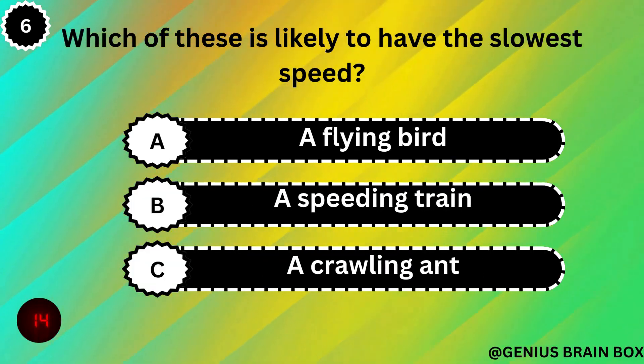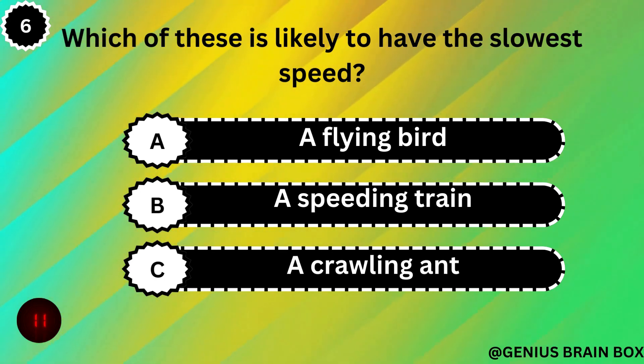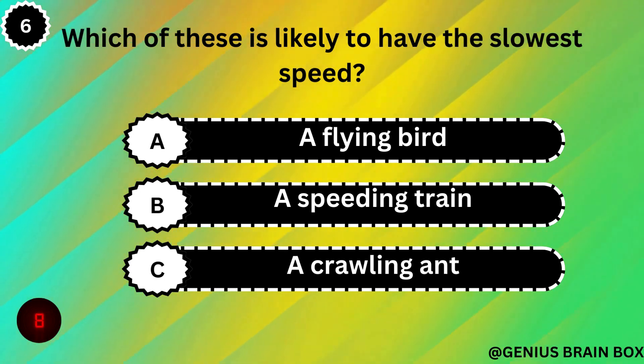Which of these is likely to have the slowest speed? A flying bird, a speeding train, or a crawling ant.